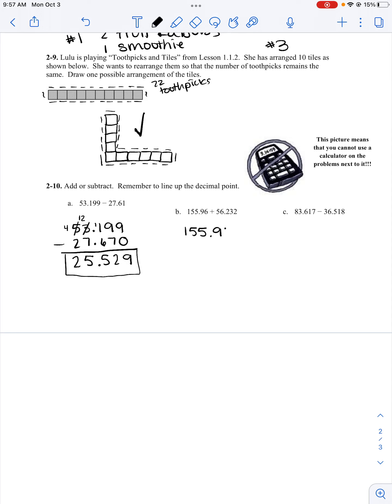For part B, I'm adding. I'm making sure to line up my decimals. If I have extras, I fill in with zeros so I don't get confused. Zero plus two is two. Six plus three is nine. Nine plus two is eleven, carry my one. I drop my decimal down. Five plus one is six. Six plus six is twelve. Five plus five is ten, plus one is eleven. One plus one is two.